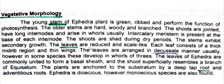The second main part are the leaves produced on the stems. These leaves are reduced and scale-like, small in size and brownish in color. Each leaf consists of a thick midrib region and thin wings.